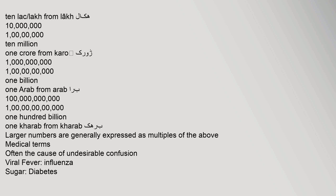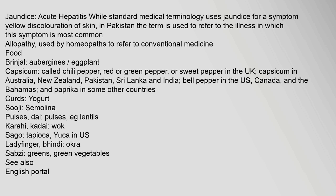Medical terms often cause undesirable confusion in Pakistani English: 'viral fever' means influenza; 'sugar' means diabetes; 'jaundice' refers to acute hepatitis, whereas standard medical terminology uses jaundice for a symptom. 'Allopathy' is used by homeopaths to refer to conventional medicine. Food terminology includes: 'brinjal' for aubergine or eggplant; 'capsicum' for bell pepper; 'curds' for yogurt; 'suji' for semolina; 'pulses' for dal or lentils; 'karahi' for wok; 'sago' for tapioca; 'ladyfinger' or 'bindi' for okra; and 'sabzi' for green vegetables.